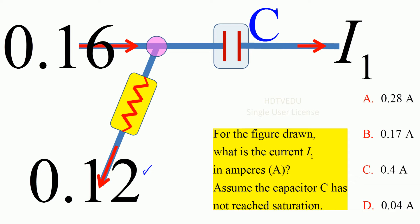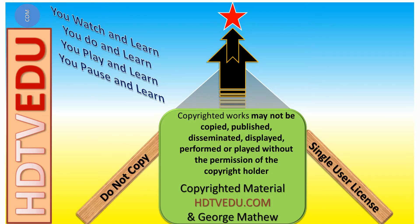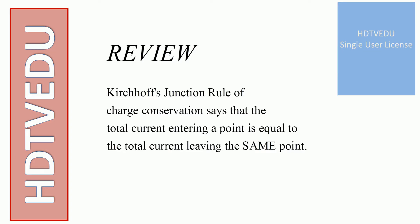Question is: what is current I1 in amperes? If the capacitor has not reached its saturation point, the current is not zero through the capacitor. Again, let's do a fast review.